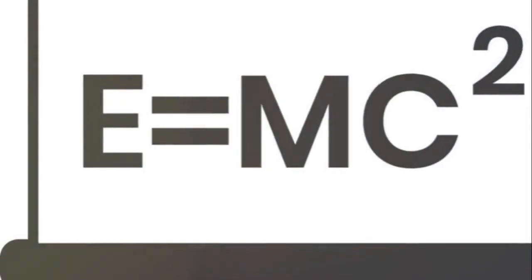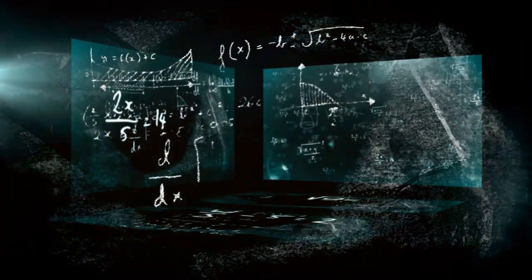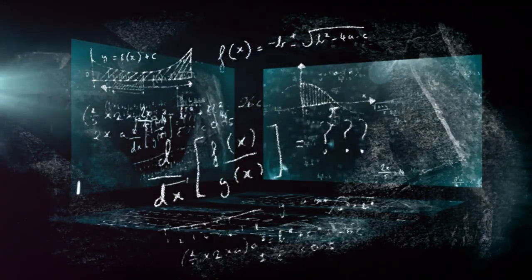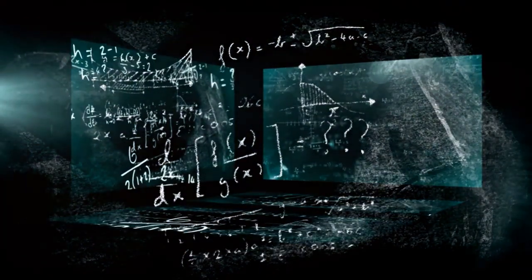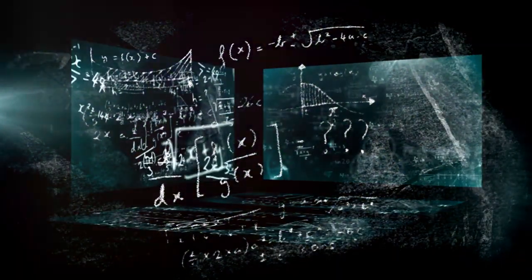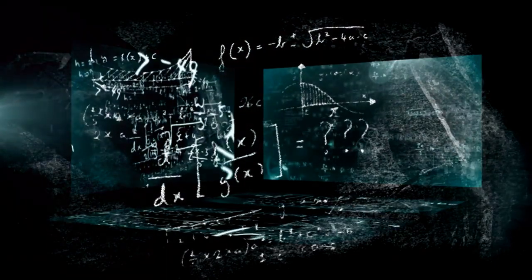Then we have the Lagrangian for electromagnetism. This describes the behavior of electric and magnetic fields, and their interactions with charged particles. Maxwell's equations, fundamental to classical electromagnetism, are central components of this Lagrangian.